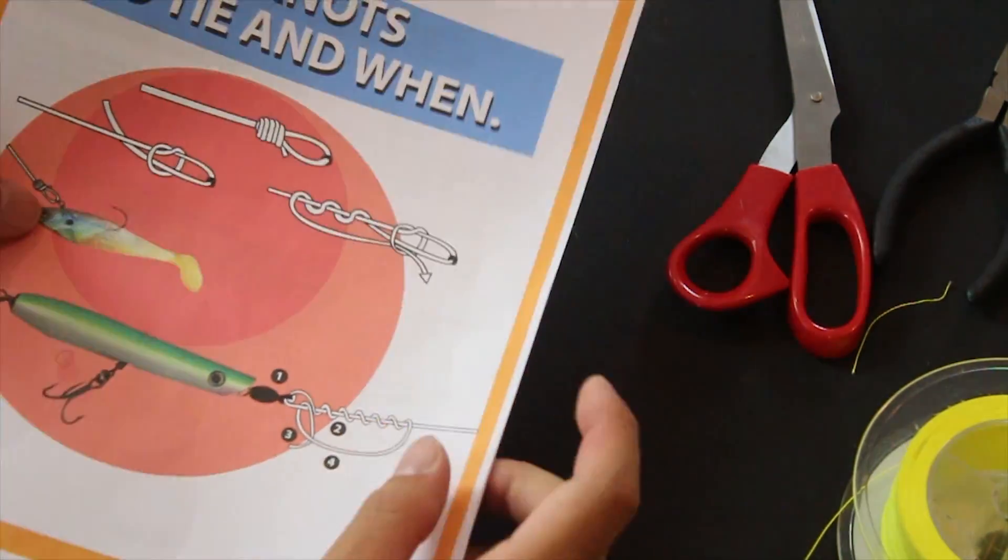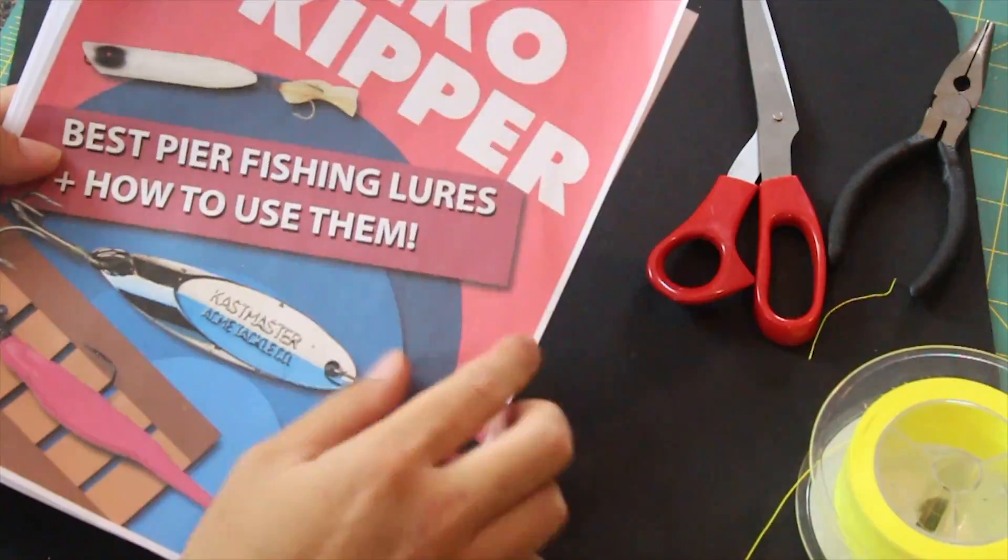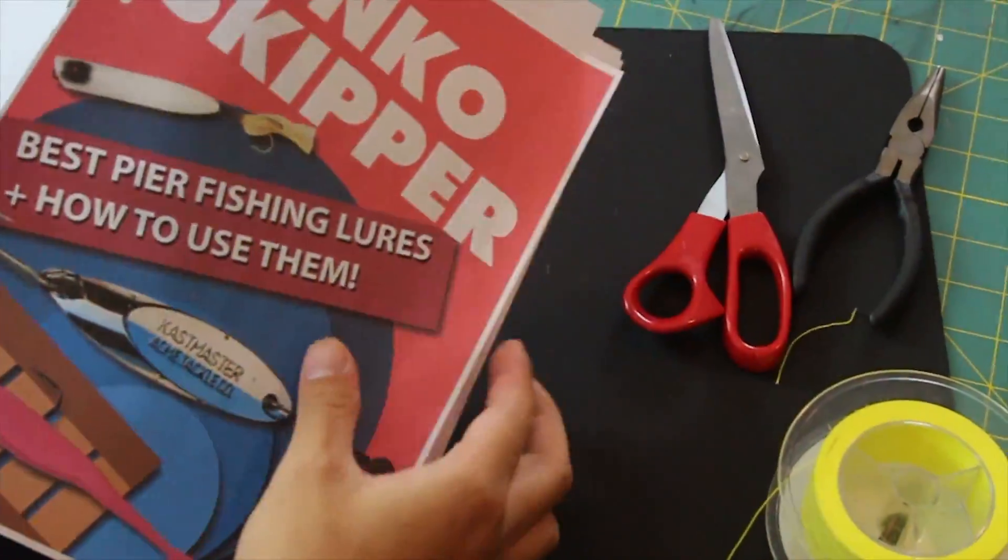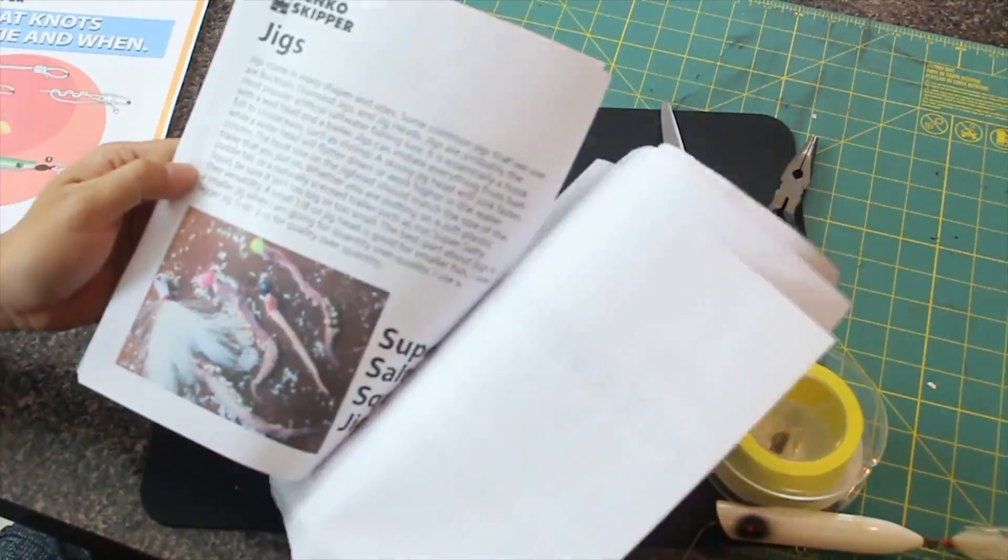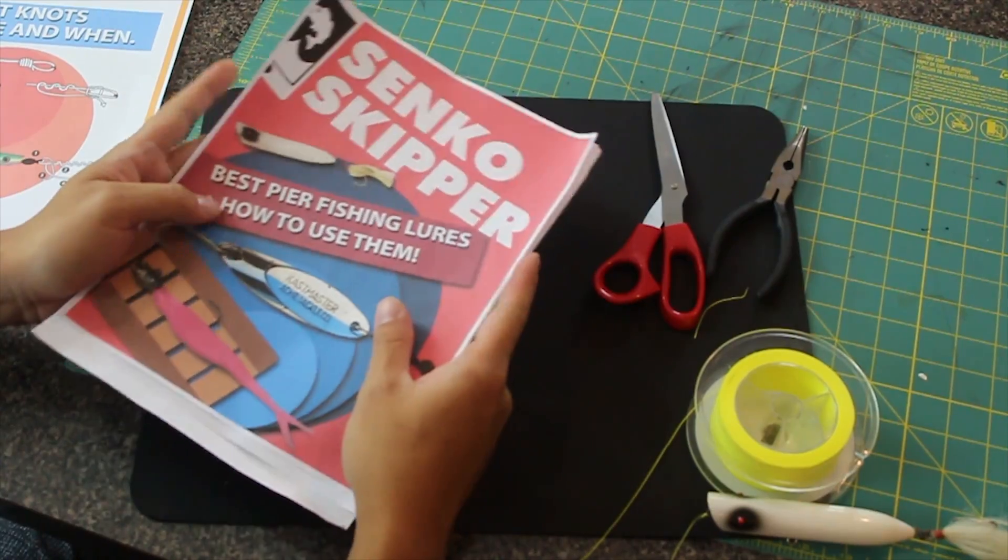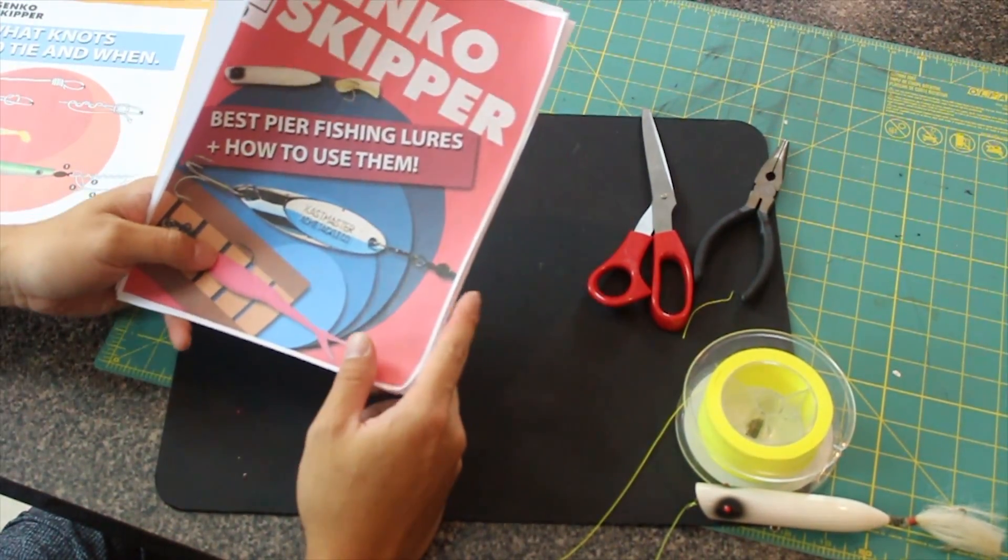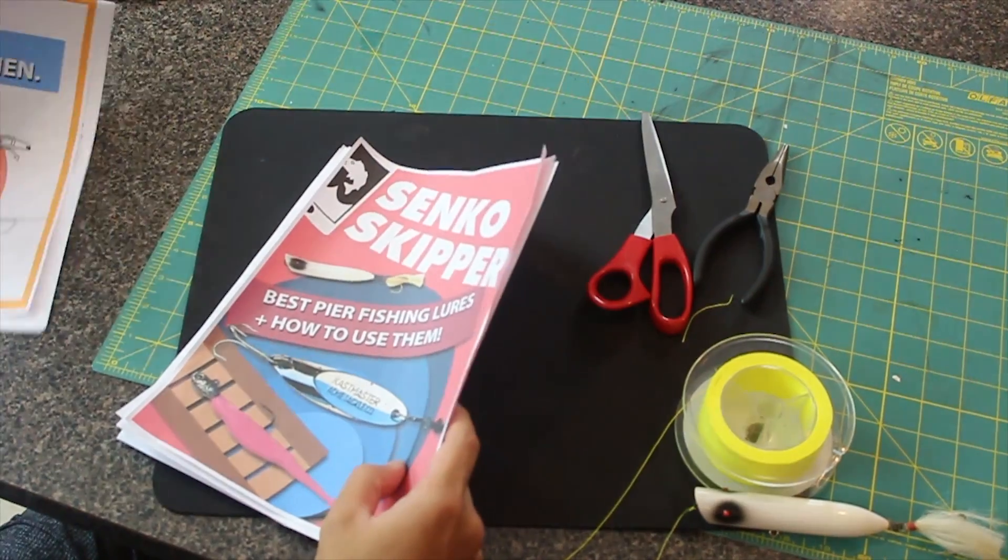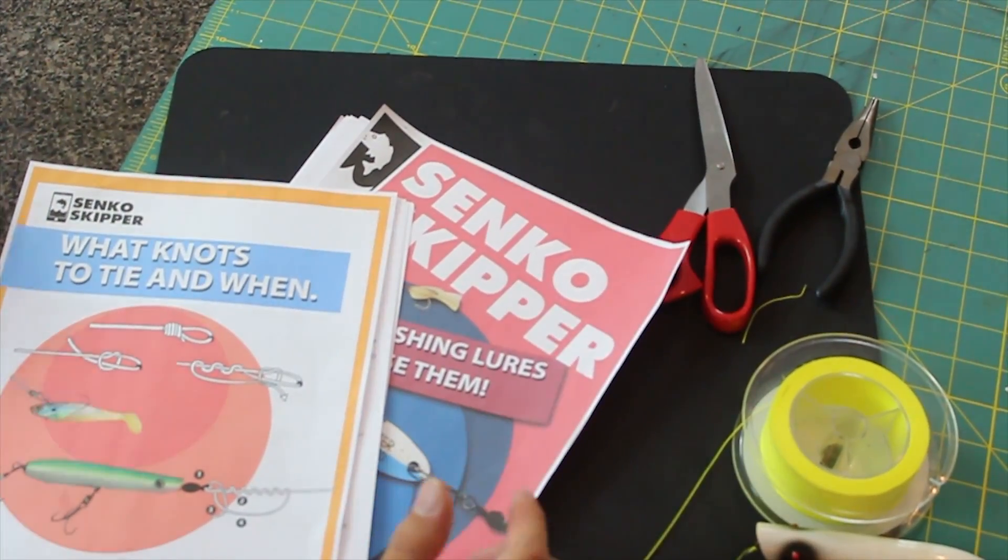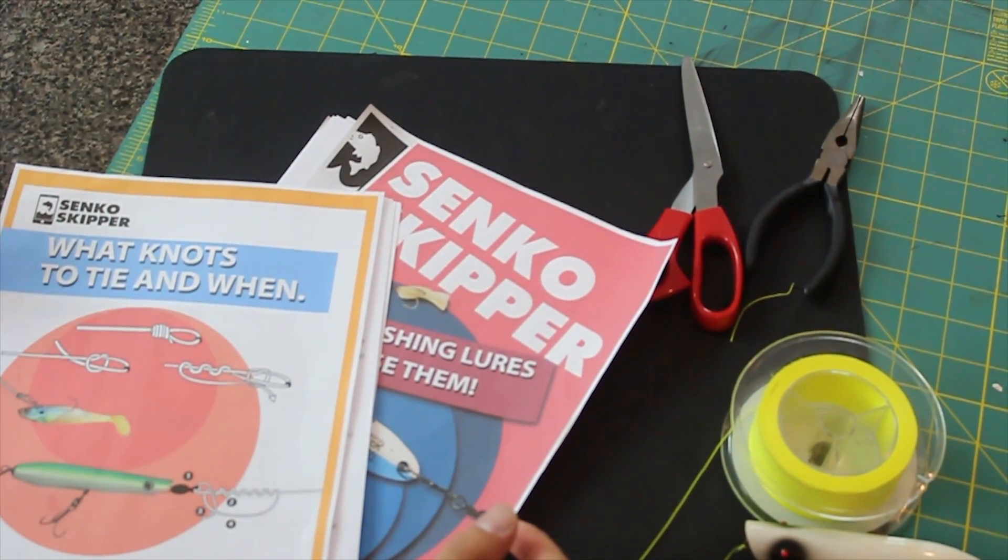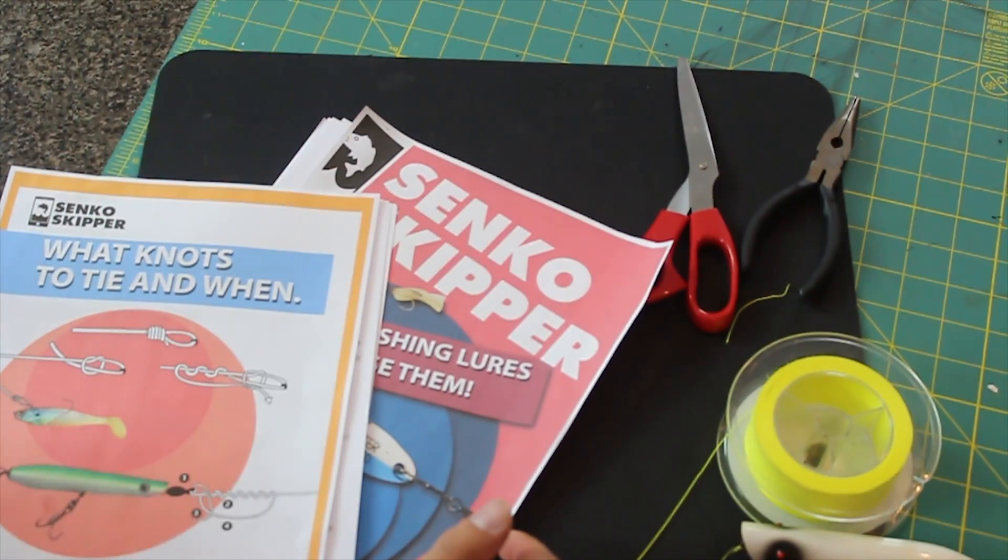Anyways, this is all available at senkoskipper.com. We've got the 'What Knots to Tie and When' and we also have a brand new 'Best Pier Fishing Lures and How to Use Them.' So we are really making an effort to try and teach people and share our knowledge with as many beginner fishermen or anyone who wants to learn as possible, by creating these guides and creating products to help you guys get on fish, less frustration, more fun.